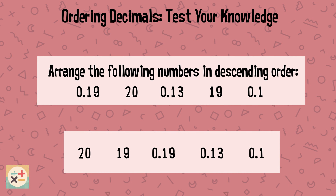In descending order the numbers are: 20, 19, 0.19, 0.13, and 0.1.